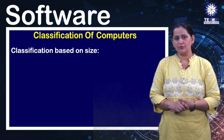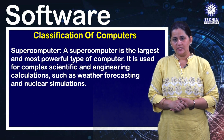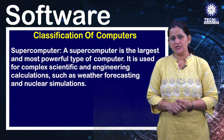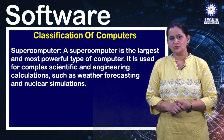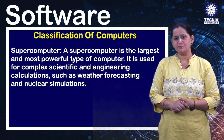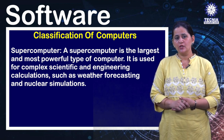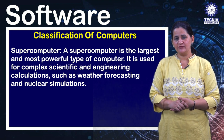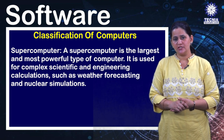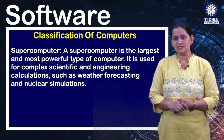The first classification is based on size. The first type is supercomputer. A supercomputer is the largest and most powerful type of computer. It is used for complex scientific and engineering calculations such as weather forecasting, nuclear simulations, etc.